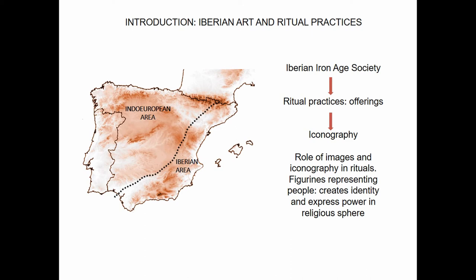In this Iberian Iron Age, we know that the most important ritual practices — like in other cultures in the Mediterranean — are the language of offerings. We know a lot about the rituals, symbols, and religious practices through the offerings placed in different sanctuaries or cult places, some in caves, some in monumental buildings. One important element is that these offerings and motifs, at a specific moment, take the form of iconography or items with a specific iconography.